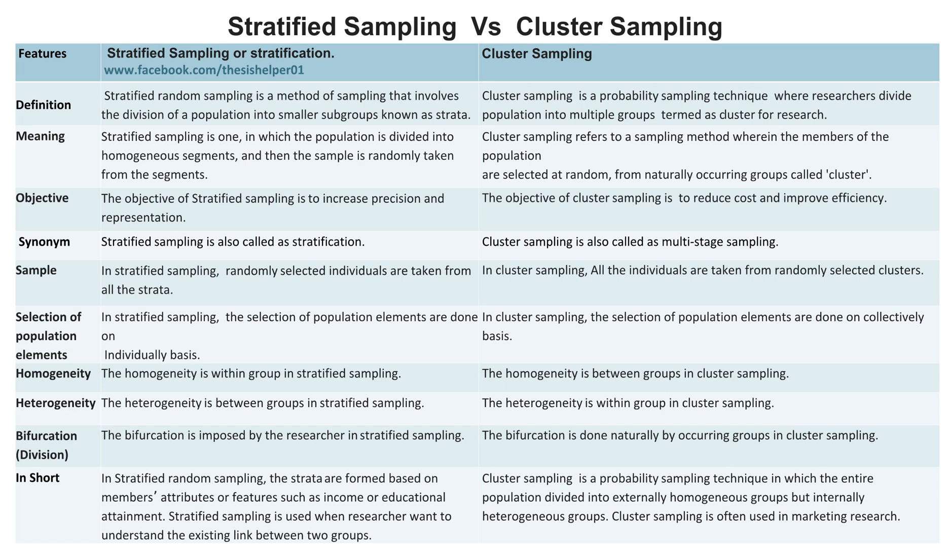In stratified sampling, randomly selected individuals are taken from all the strata. Whereas, in cluster sampling, all the individuals are taken from randomly selected clusters.